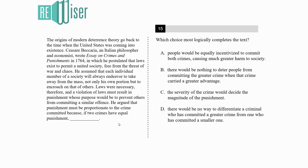The origins of modern deterrence theory go back to a time when the United States was coming into existence. Cesare Beccaria, an Italian philosopher and economist, wrote Essay on Crimes and Punishments in 1764, in which he postulated that laws exist to permit a united society free from the threat of war and chaos.